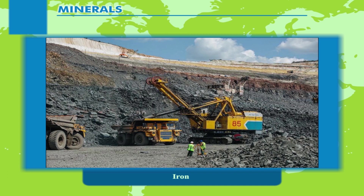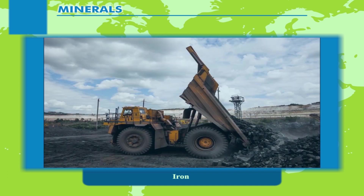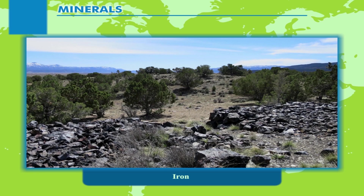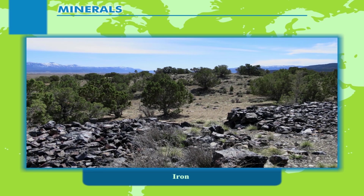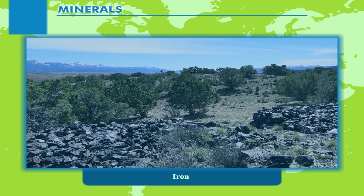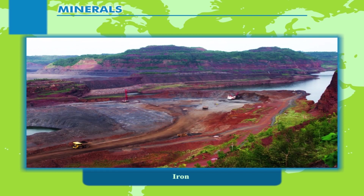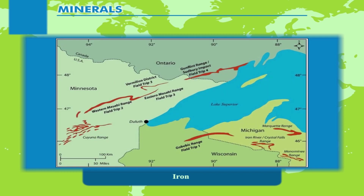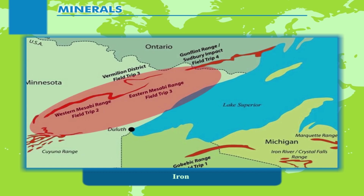Russia is the leading producer of iron ore in the world. The main iron ore fields are near Moscow and in Krivoi Rog. Siberia and Ural regions are also rich in iron ore mining. In the USA, iron ore mines are concentrated in the Great Lakes region, where the Mesabi Range is an important mining area.